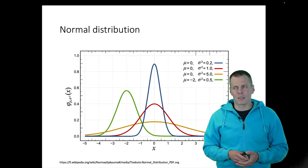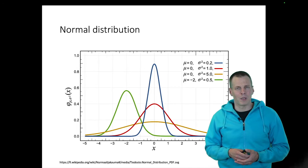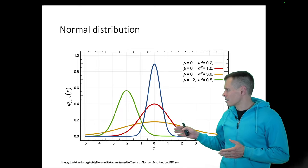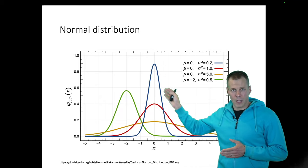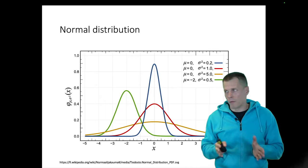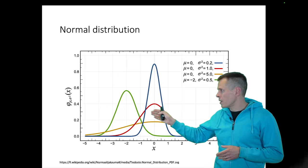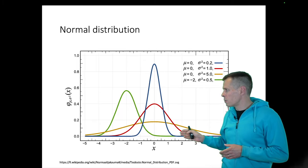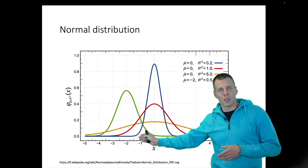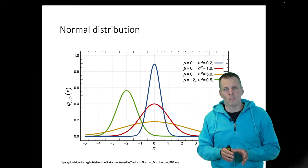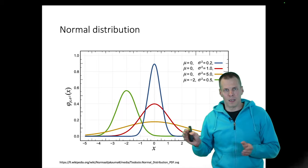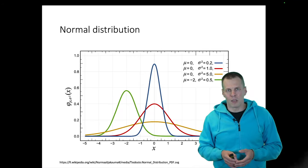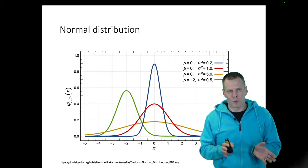Here is the normal distribution from Wikipedia. It's this familiar bell-shaped curve that tells us that most observations are in the middle around the mean. This blue normal distribution has a mean of zero, so most observations are close to the mean — plus or minus one standard deviation. We have some observations that might be very far from the mean, but they are very rare. Normal distribution goes from minus infinity to plus infinity, but getting values more than four or five standard deviations from the mean is not very common.